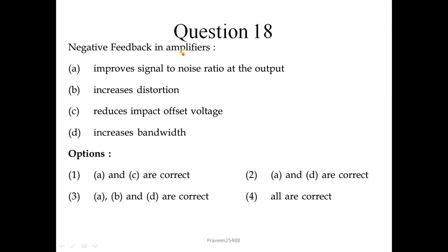Question 18: Negative feedback in amplifiers. Improves signal to noise ratio at the output - negative feedback increases the SNR, so A is correct. Increases distortion - this is incorrect. Reduces input offset voltage - this is also incorrect. Increases bandwidth - this is correct. A and D is correct. Second option is correct.